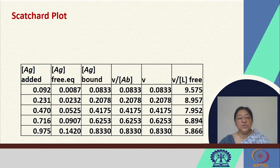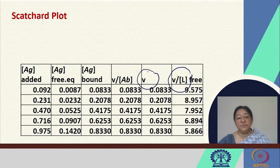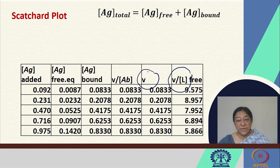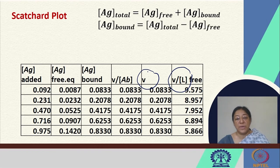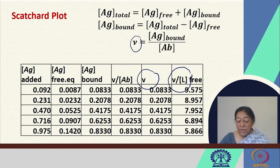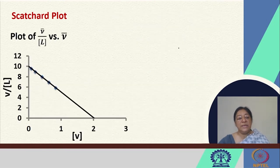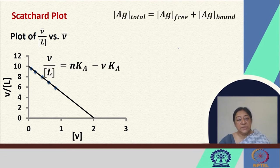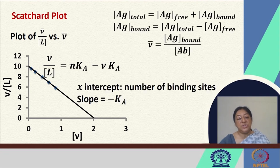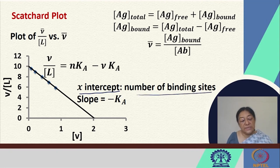To construct the Scatchard plot, we calculate ν/L and ν from the data. Total antigen equals free antigen plus bound antigen; the antigen bound equals (AG_total − AG_free). The definition of ν is the amount of ligand bound divided by total macromolecule concentration — here the antibody. Plotting ν/L versus ν using the values from the table gives a straight line where the x-intercept gives the number of binding sites and the slope equals −Ka.